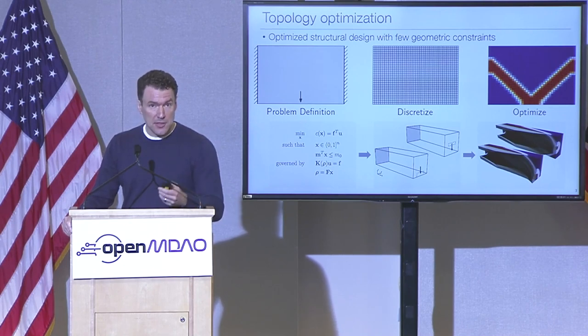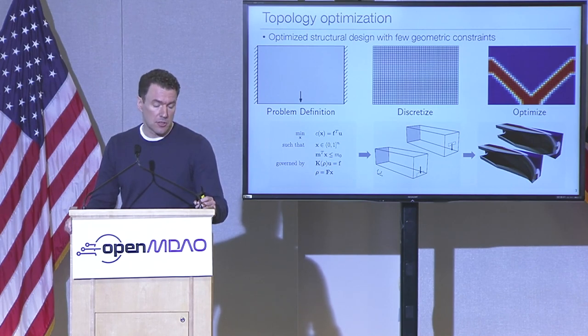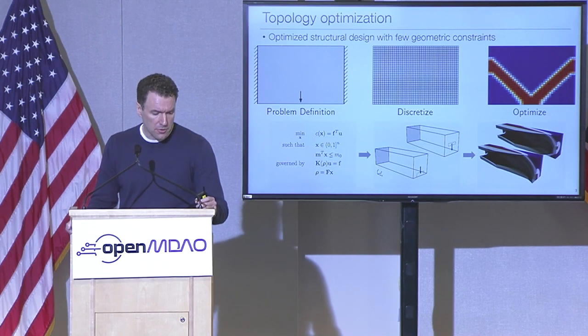Because the volume mesh can be very large, there tends to be a lot of design variables in these topology optimization problems. We then optimize with the original problem definition to obtain an optimized structure. On the lower right you can see two examples of topology optimization with a large number of degrees of freedom.